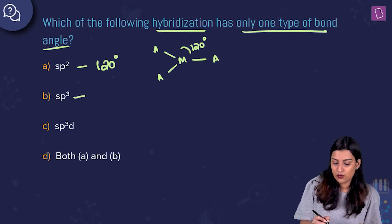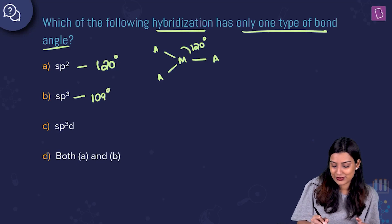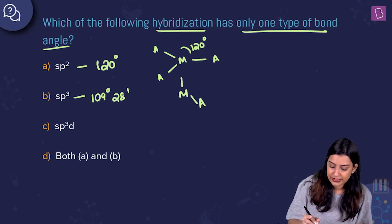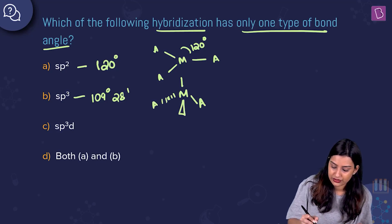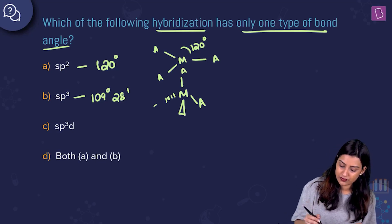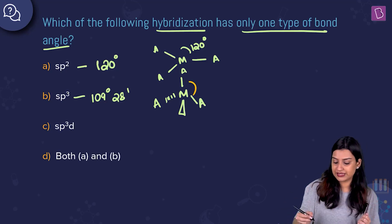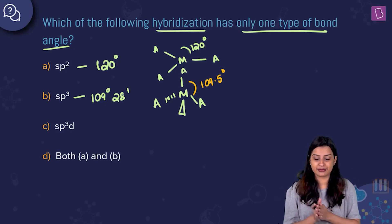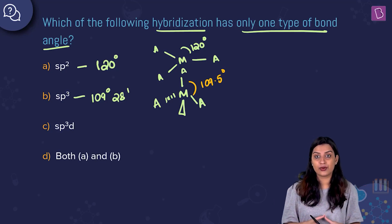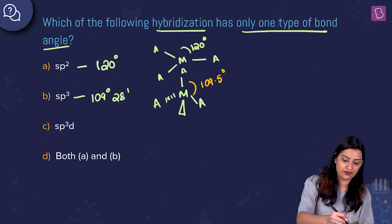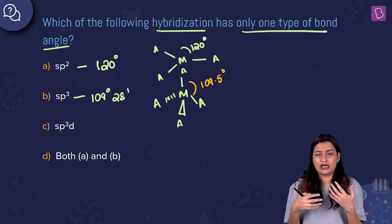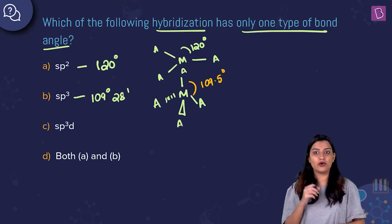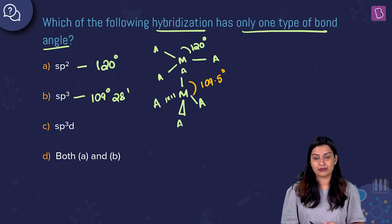For sp³ hybridization, the bond angle is 109.5°. In an MA₄-type molecule, all four bond angles are equal at 109.5°, so again there is only one type of bond angle — as long as we are talking about a perfectly symmetric MA₄ molecule. If it were MA₃B or MA₂B₂, different bond angles could arise, but not for MA₄.